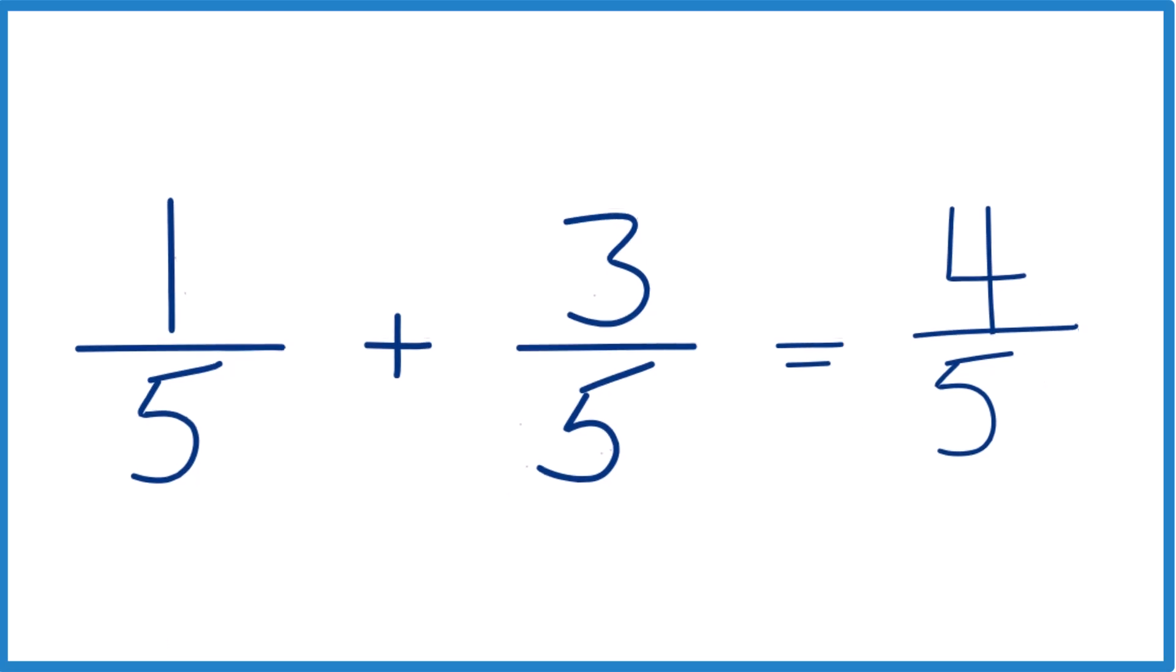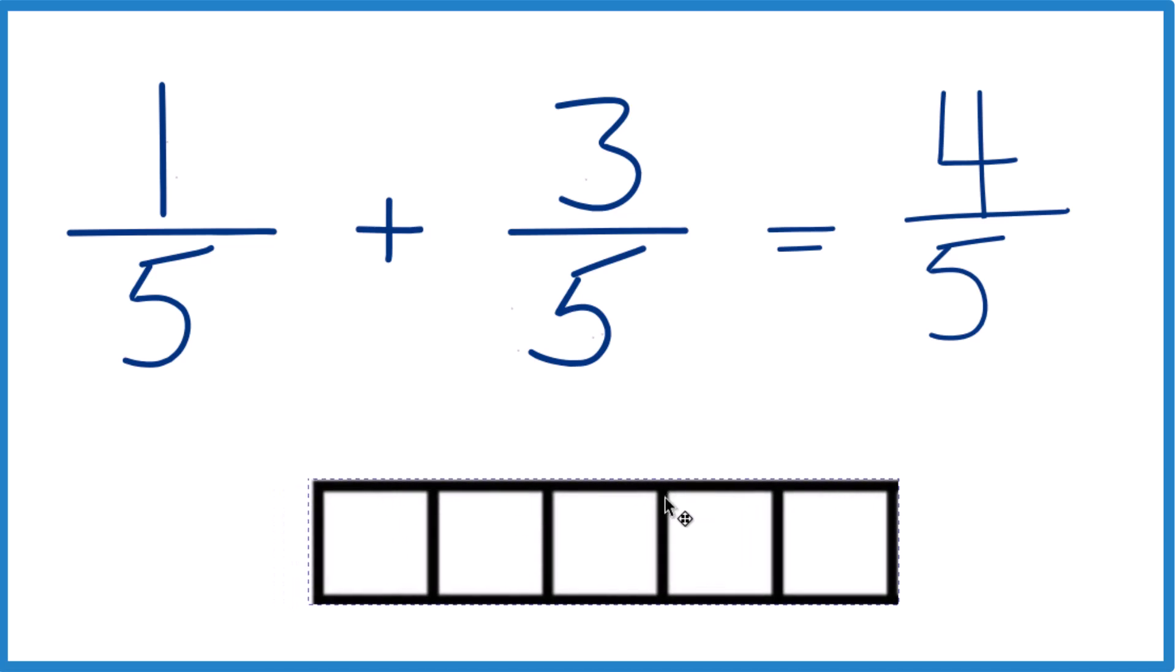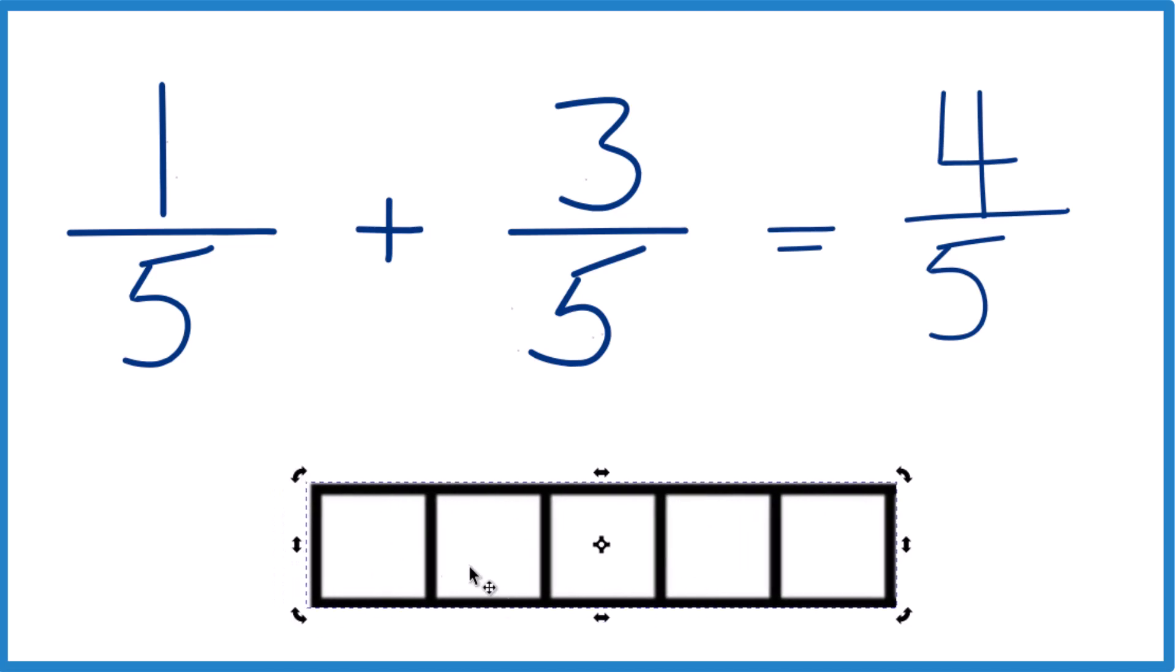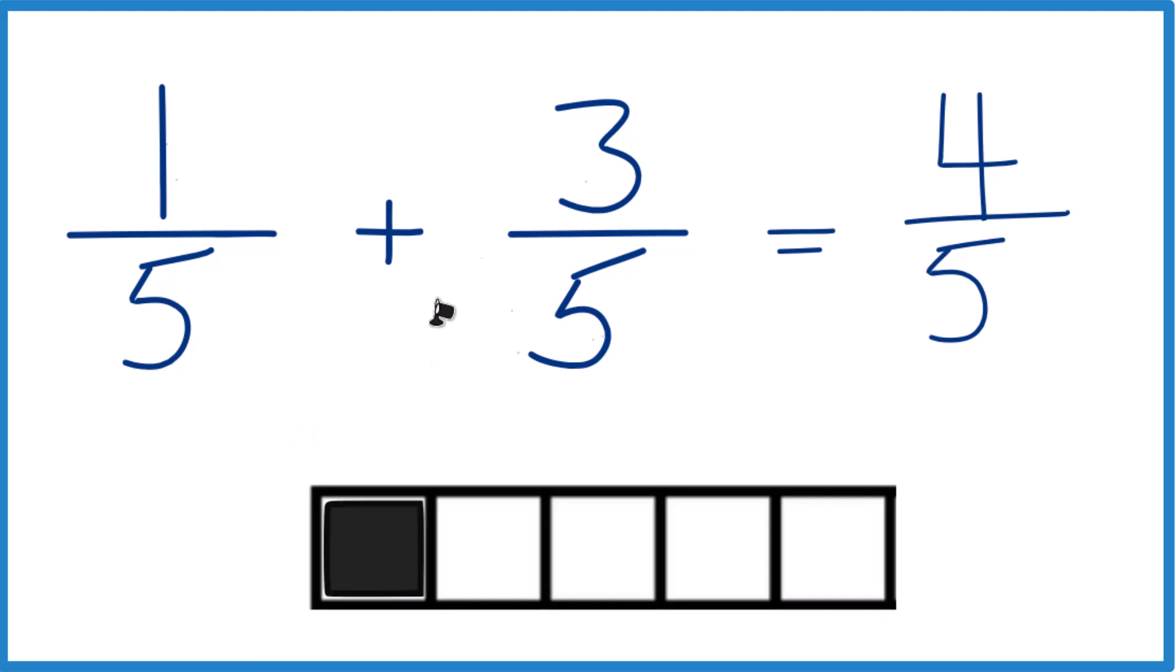One way to think about it is like this. So say you have this block here, we have one, two, three, four, five. So five pieces here, so each one is one-fifth. And we're going to fill in our one-fifth here, and then we're going to add three more fifths, three-fifths.